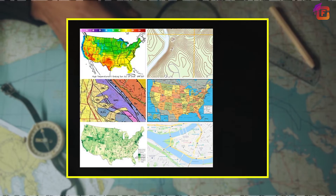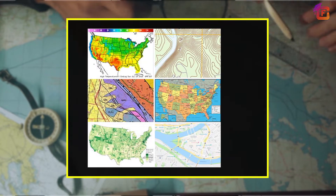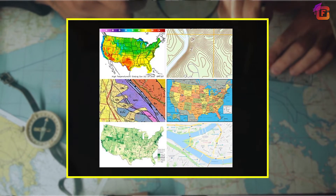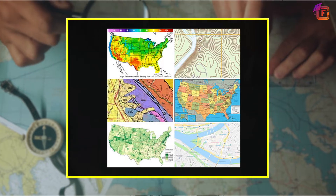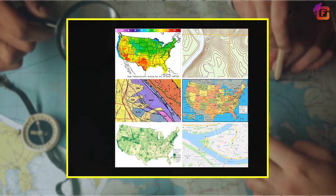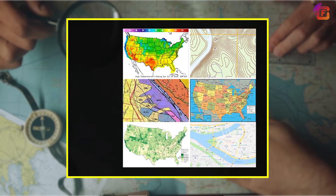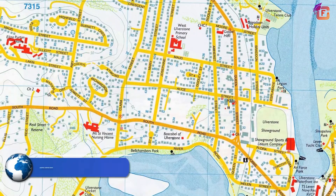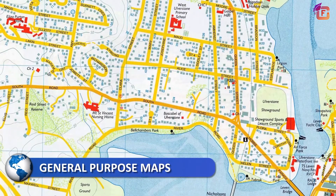Maps are not only of different types but can even be grouped in different ways. Based on the type of information represented, there are two main categories of maps: general purpose maps and thematic maps.